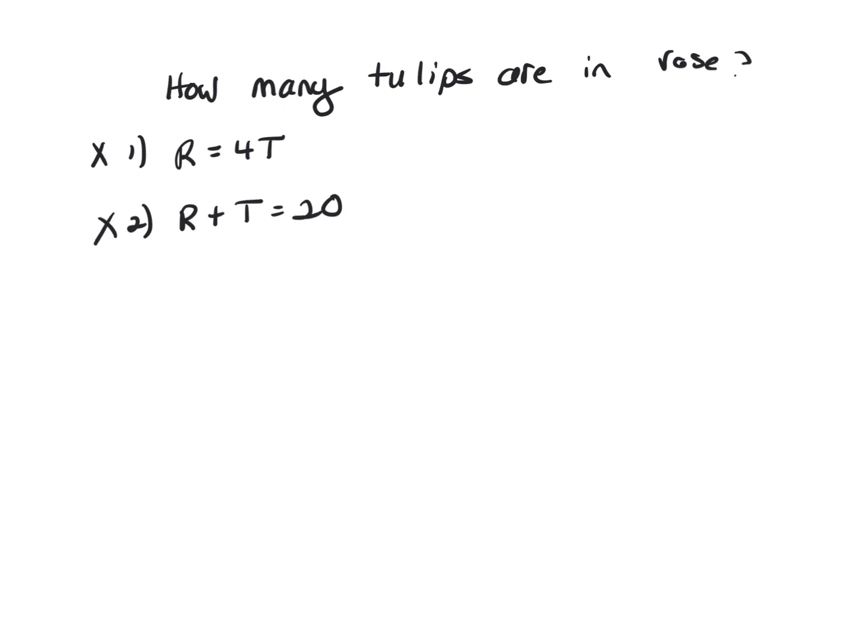Now what you do is you put both of them together. You've got R equal 4T, and R plus T equals 20. And that works. You have got two equations in the same two variables, so you can solve it. You could stop right now. Your answer is C.